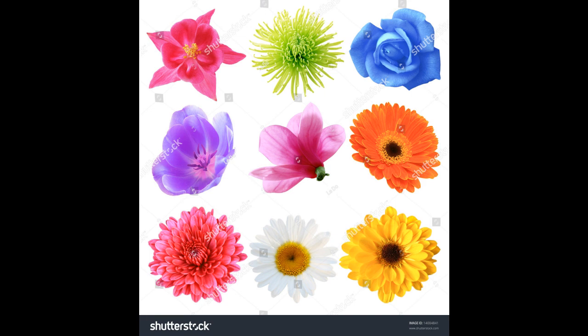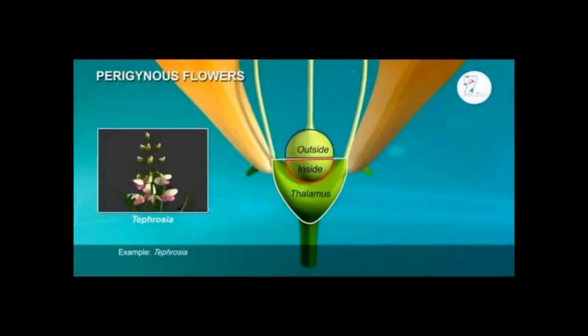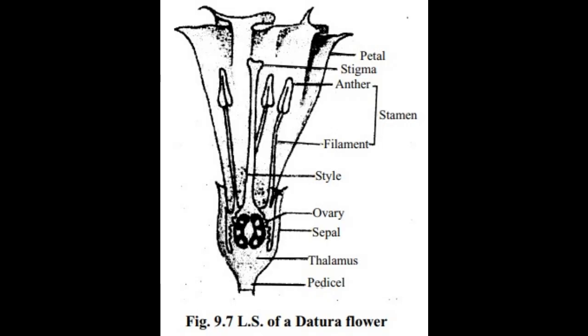Now let us see the structure of a flower. To study the structure of a flower, we are taking the datura flower. The datura flower is held to the stem by its stalk. This stalk is green in color and has a slightly bulged head called the thalamus. The thalamus is the place where the four parts of the flower are present.